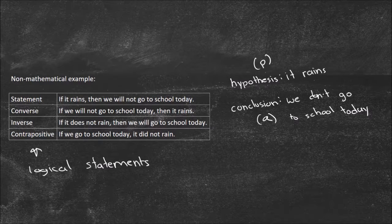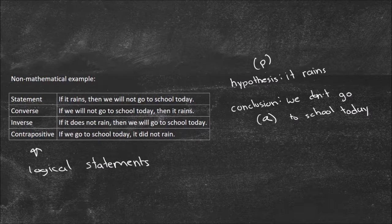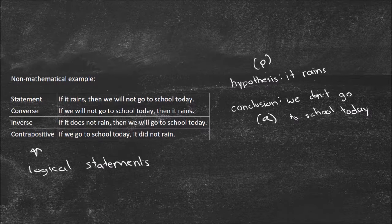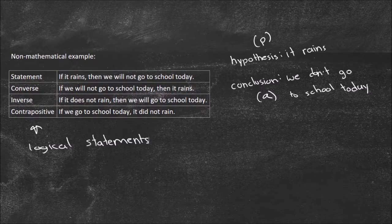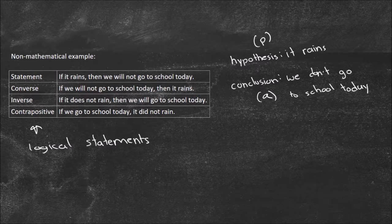'If it rains, then we will not go to school today' — that could be true; you could have a delay or something if it rained really hard. The converse says, 'if we will not go to school today, then it rains.' Is that true? I would say no, because that implies the only reason you wouldn't go to school is that it rained. What if it snowed? You still would not go to school, but that doesn't mean it rained — so the converse is not necessarily true. Similarly, the inverse says 'if it does not rain, then we will go to school.' For the same reason — what if it snows? It didn't rain, but we're still not going to school. So the inverse is also not true.